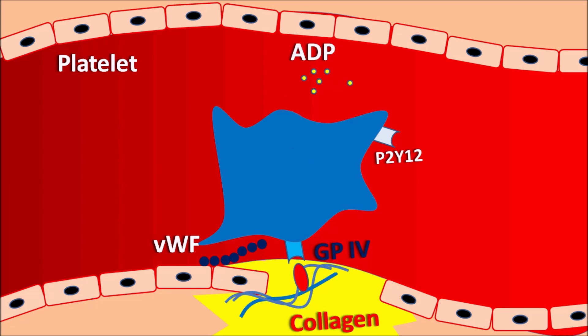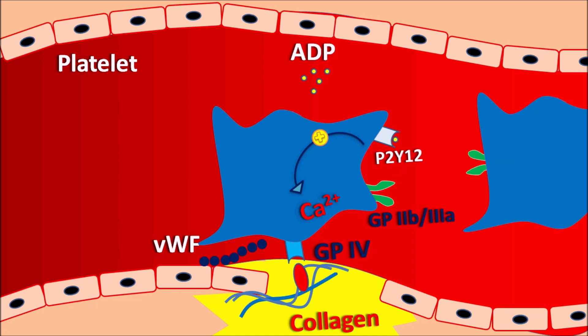ADP binds to the P2Y12 receptor, which stimulates calcium signaling. Calcium is responsible for the expression of GP2B/3A receptors on the platelets — these are receptors for fibrin. When these receptors are activated, platelets connect with other platelets to produce platelet aggregation. Other platelets expressing GP2B/3A receptors are connected via a fibrin mesh. In this way, ADP acts as a mediator driving platelet aggregation. Other mediators like thromboxane A2 also contribute to platelet activation and aggregation.